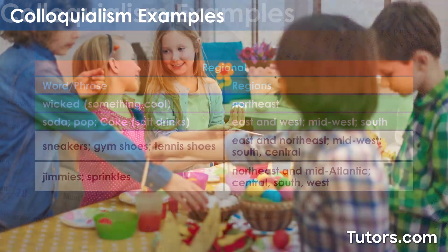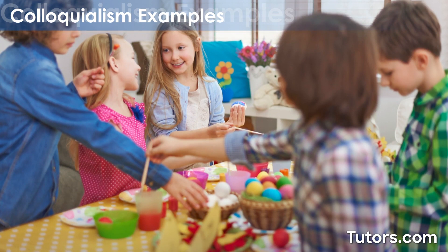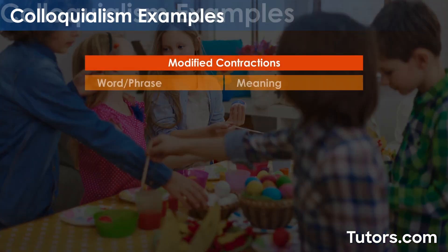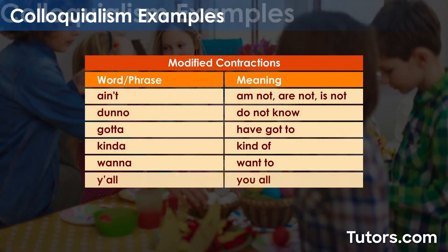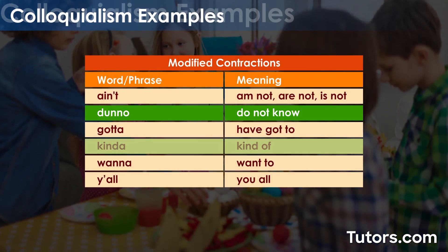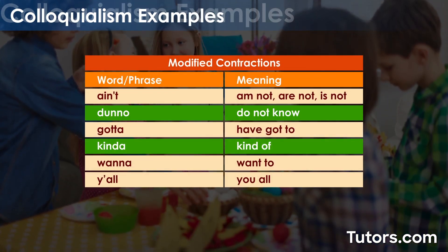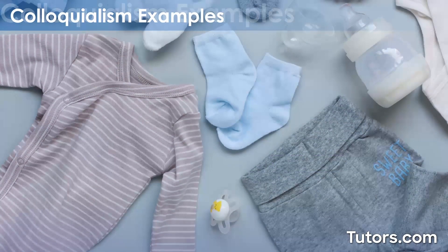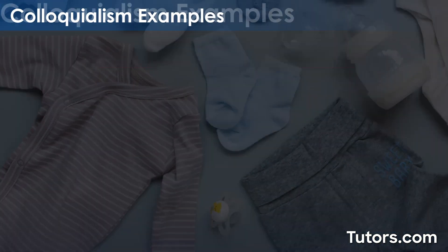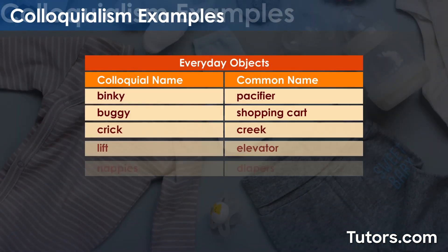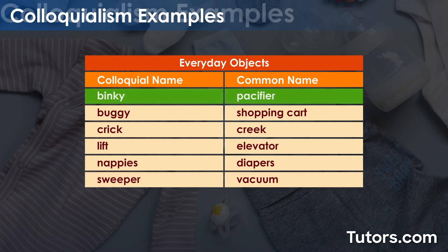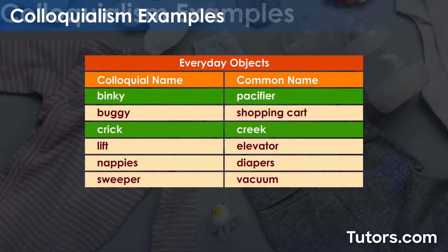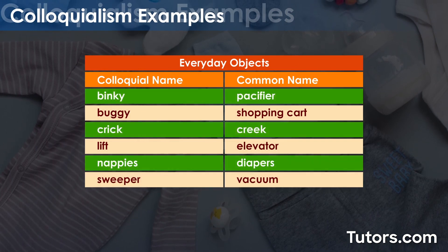A few modified contractions we may use in everyday speech are d'know, kinda, and wanna. Everyday objects are frequently colloquialized, like binky, crick, and nappies.